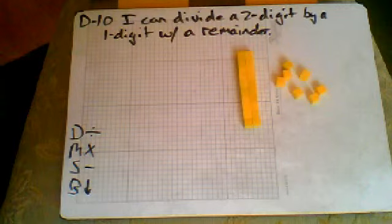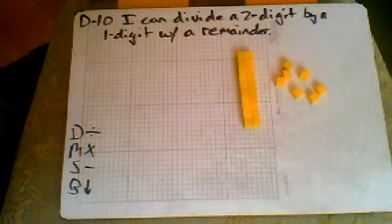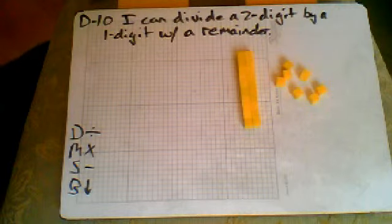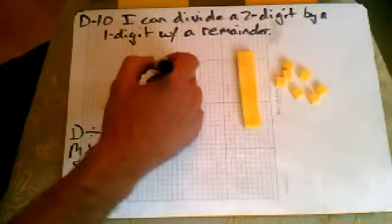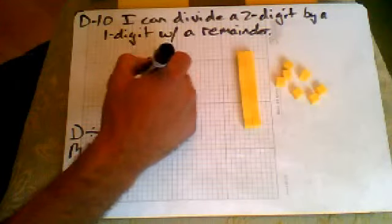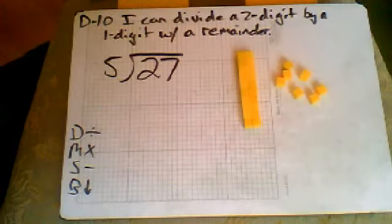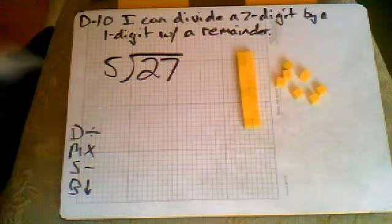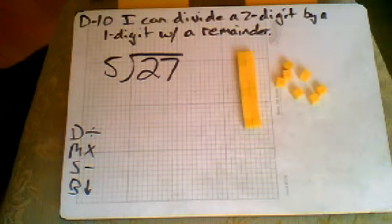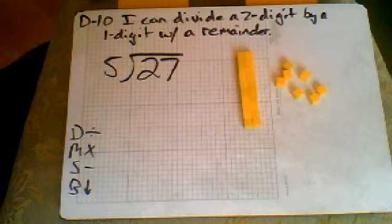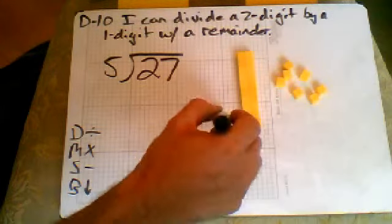I can divide a two-digit by a one-digit with a remainder. So I'm going to skip that first problem because we're going to jump right to the second problem on your sheet, and that is 27 divided by 5. Let's say you had 27 cubes, could be 27 dollars, could be 27 whatever, 27 divided by 5. So we know we're going to have 5 groups.